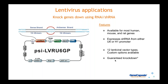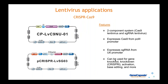We also have lentiviral solutions for RNAi, mainly for shRNA, available for most human, mouse, and rat genes. shRNAs are expressed from either the U6 or H1 promoter — both Pol III promoters. We have 12 lentiviral vector types and we guarantee knockdown: we provide sets of four shRNAs and guarantee that if you don't get 70% knockdown at the RNA level from one of the four, we'll provide a one-time free replacement.